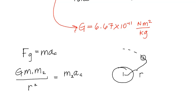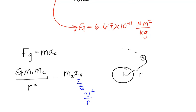Now ac, remember, is the centripetal acceleration. It is v squared over r. So making a substitution there, G m1 m2 over r squared will equal m2 times v squared over r.